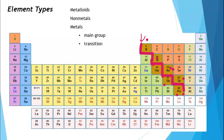You might notice that there is one element, aluminum, that borders the staircase but is not actually a metalloid. Aluminum is a main group metal, so you just have to remember that one exception.